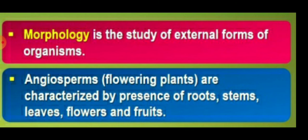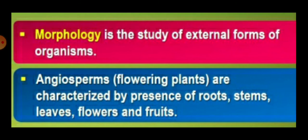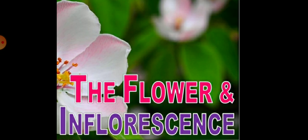The angiosperms, which we discussed in the previous chapter, are the flowering plants, characterized by the presence of roots, stems, leaves, flowers and fruits. In this chapter we will discuss about the flower and the inflorescence, and one family related to our practical course, which is the Solanaceae.